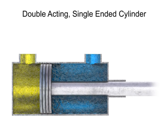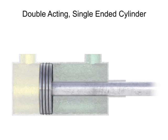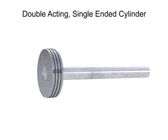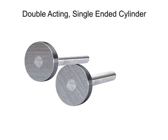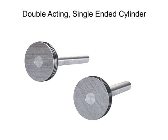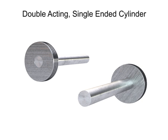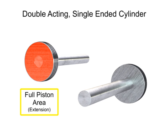To determine the speed of a piston during extension and retraction, we must first determine the significant working areas. The full piston area is the side of the piston without the rod. This is the area that feels pressure as the piston extends.